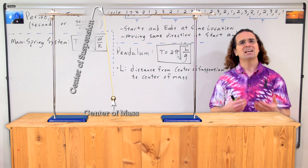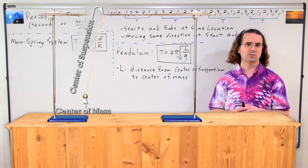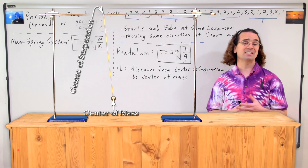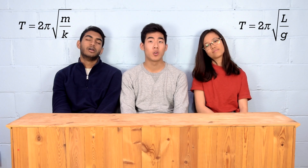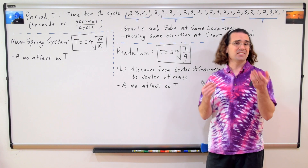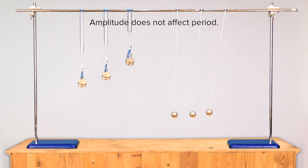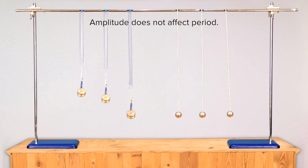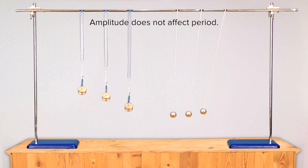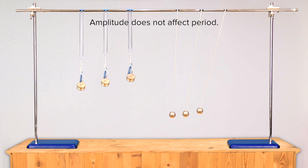Those are the equations. Now let's identify what affects the periods of pendulums and mass-spring systems. Kevin, which of these two period equations has amplitude in it? Neither of the two period equations has amplitude in it. So, do you think amplitude affects period? No. It looks like amplitude does not affect period. That is correct. And you can see in these demonstrations that amplitude does not affect the time it takes for one full cycle. Adjusting just the amplitude of the pendulum or the amplitude of the mass-spring system does not cause a change in the period of simple harmonic motion.